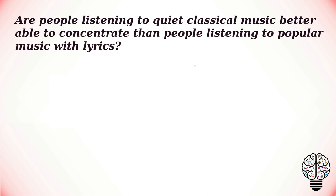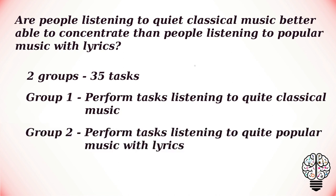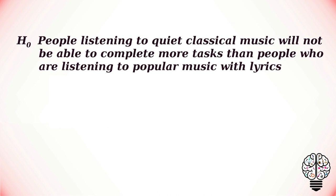Now let us look at the two-sample t-test through an example. The situation: are people listening to quiet classical music better able to concentrate than people listening to popular music with lyrics? To test this, we select two groups and ask them to complete 35 tasks requiring concentration. Group one does the tasks while listening to quiet classical music; the other group does them while listening to popular music with lyrics. This is a one-tailed t-test, as we are testing if one group performs better than the other — the word 'better' indicates a higher value.